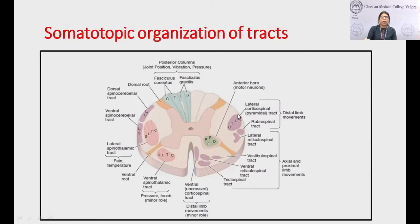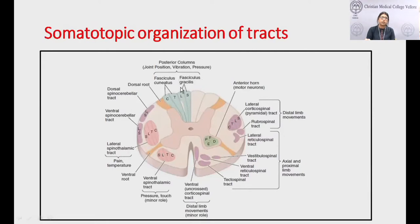In contrast to the spinothalamic and corticospinal tracts, in the posterior column the cervical fibers are more lateral compared to the sacral fibers. The fasciculus gracilis carries proprioception information from the lower limbs, and the fasciculus cuneatus carries proprioception from the upper limbs and trunk.